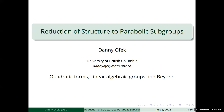We're going to talk about reduction of structure to parabolic subgroups for torsors of semi-simple groups. We'll take a torsor over a field, or a cohomology class over the field, and check if it is coming from a torsor on some proper parabolic subgroup.